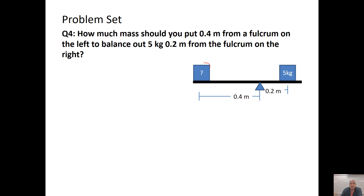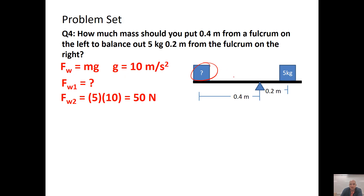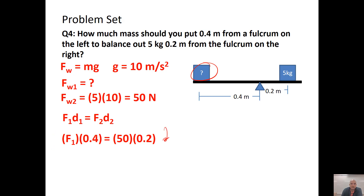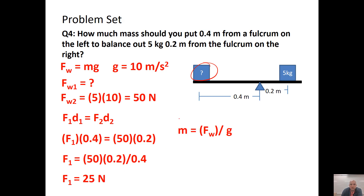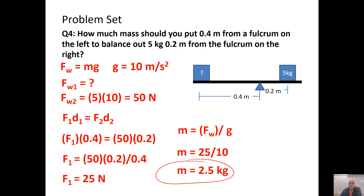Problem 4: How much mass should you place 0.4 meters from the fulcrum to balance a 5-kilogram block 0.2 meters away on the other side? The 5 kg block weighs 50 newtons. Setting up: 50 times 0.2 equals F times 0.4. Solving gives F equals 25 newtons. Converting to mass: 25 divided by 10 equals 2.5 kilograms.